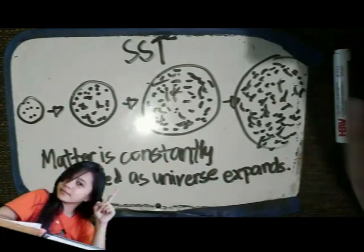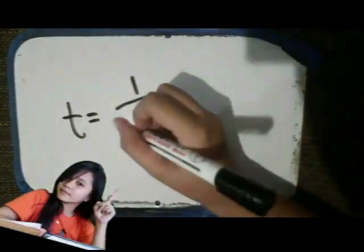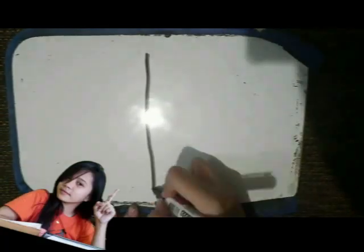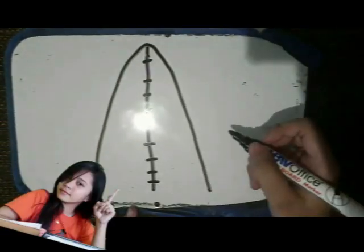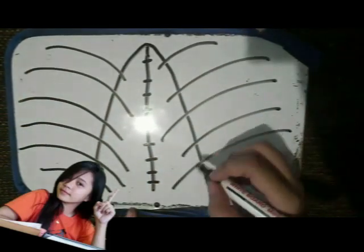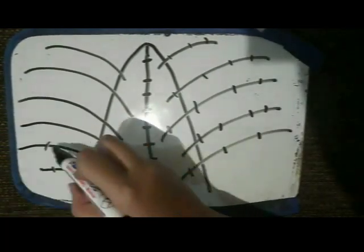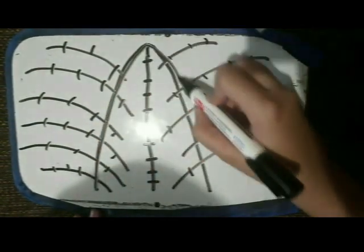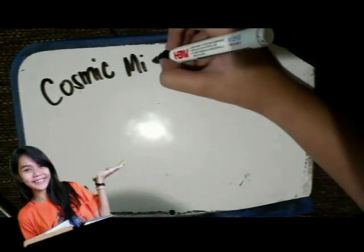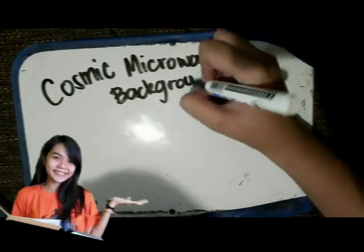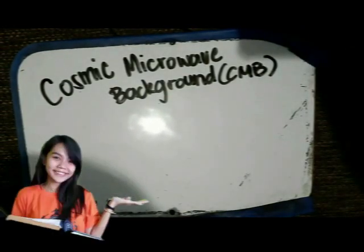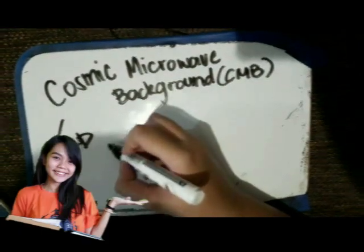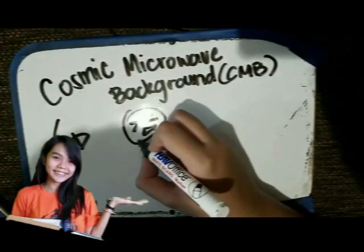The steady state model requires continuous creation of matter. The average age of matter in the steady state model is relatively young, but some galaxies are much older than the average. The age of globular clusters can be accommodated if the Milky Way is older than the average. Discovery of the cosmic background black body radiation later completed the downfall of the steady state. The universe now is not producing a black body since it is not isothermal and is transparent rather than opaque. In the steady state, the universe was always the same so it would never produce a black body. Hence, the existence of the black body background radiation ruled out the steady state theory.